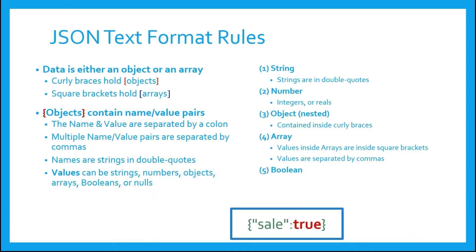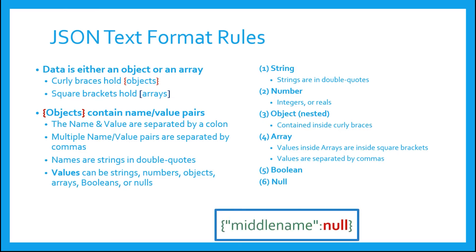The fifth value type is Boolean — that is, a name that can have a value of true or false. Thus, the name-value pair in this example has a name of cell and a Boolean value of true. Notice that true is not contained in quotes. Just like numbers, Booleans are not contained in quotes. The sixth and final value type is null. Just like numbers and Boolean types, the JSON null doesn't have quotes around it.